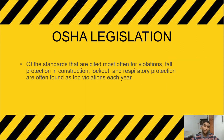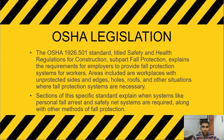Most employers violate OSHA laws, and the laws most often violated are fall protection in construction areas, lockout, and respiratory protection — these are found as the top violations each year. The OSHA 1926.501 standard on safety and health regulations for construction covers fall protection and explains the requirement for employers to provide fall protection systems for workers.